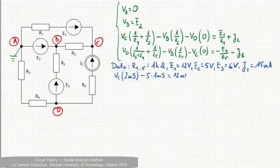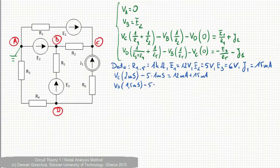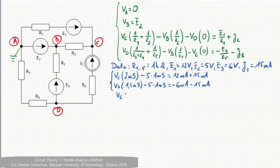12 mA and J1 plus 15 mA. Second equation Vd times 1.5 mS minus VB times 1 mS. On the right hand side,